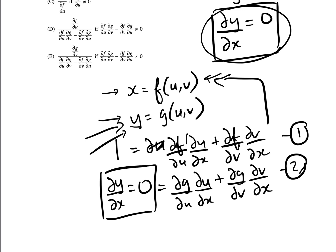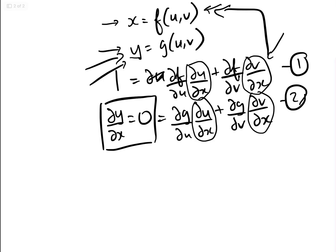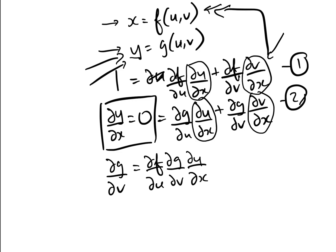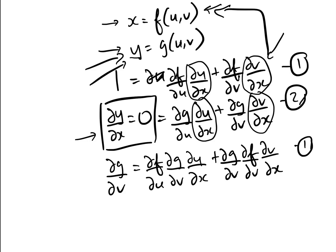Now we have du/dx in two equations, which is what we want, and also dv/dx which we don't want. So to eliminate dv/dx, multiply everything in equation 1 by ∂g/∂v, giving: ∂g/∂v equals ∂f/∂u · ∂g/∂v · du/dx plus ∂g/∂v · ∂f/∂v · dv/dx. And multiply equation 2 by ∂f/∂v, giving: 0 equals ∂f/∂v · ∂g/∂u · du/dx plus ∂f/∂v · ∂g/∂v · dv/dx.